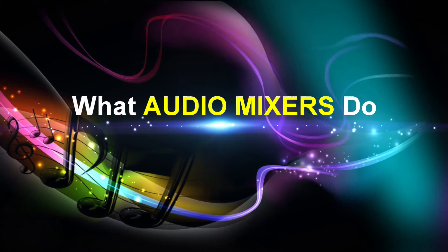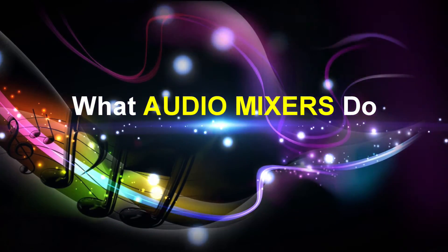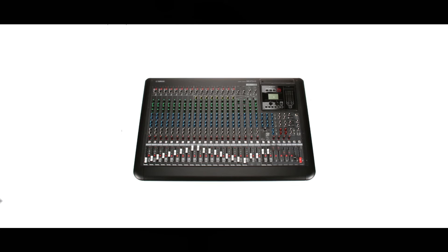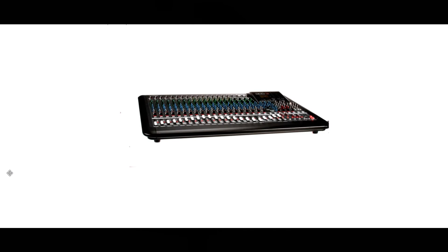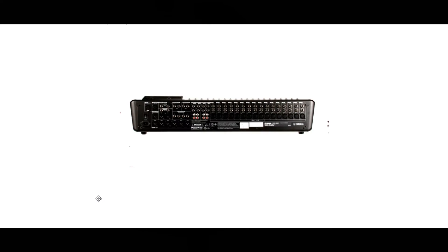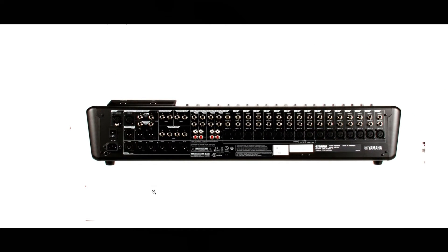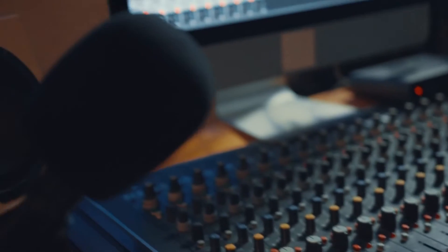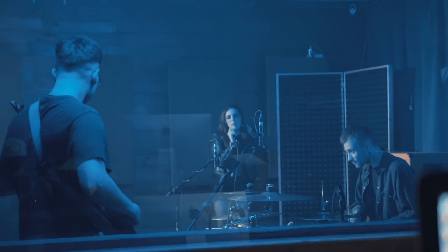Let's now take a look at what audio mixers do. Audio mixers, also known as mixing consoles, soundboards, or mixing desks, are electronic devices that are used to combine and adjust the levels of multiple audio signals. These signals can come from various sources such as microphones, instruments, and other devices that have playback audio. Audio mixers allow the user to adjust items like signal levels, EQ, and effects for each input individually, and then combine them into a single output signal. This output signal can then be sent to speakers, recording devices, or other audio equipment.